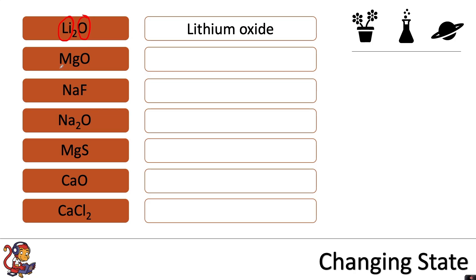In the next one, we've got magnesium bonding with oxygen to make magnesium oxide.